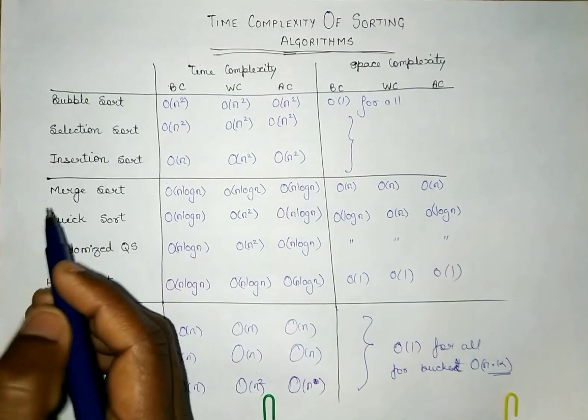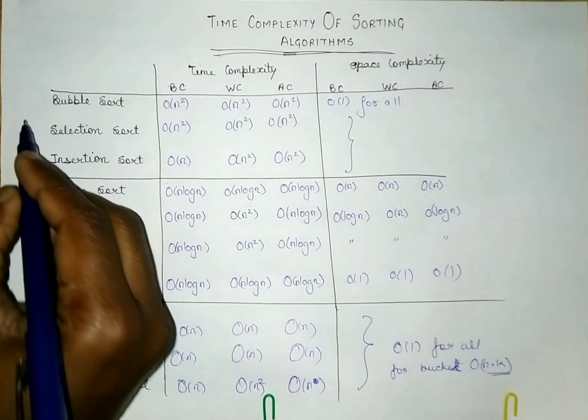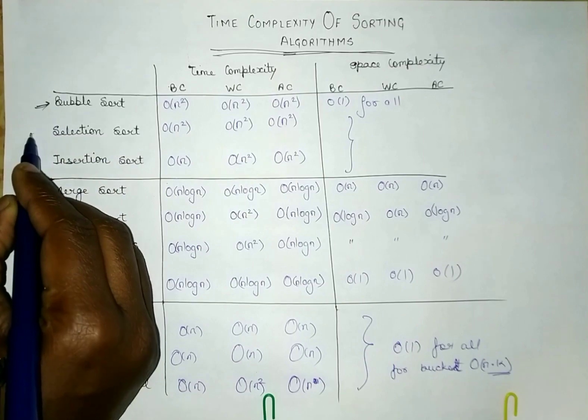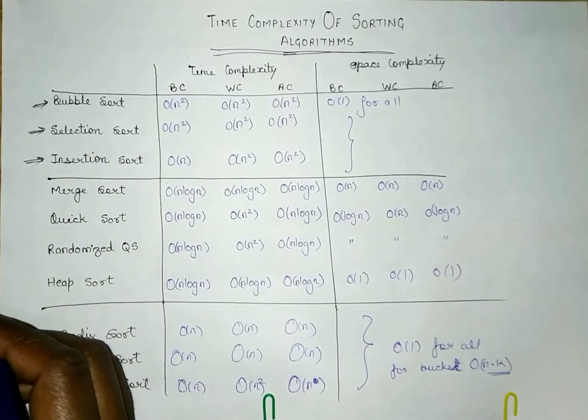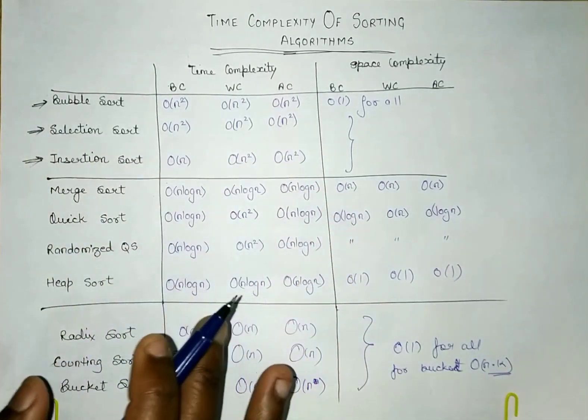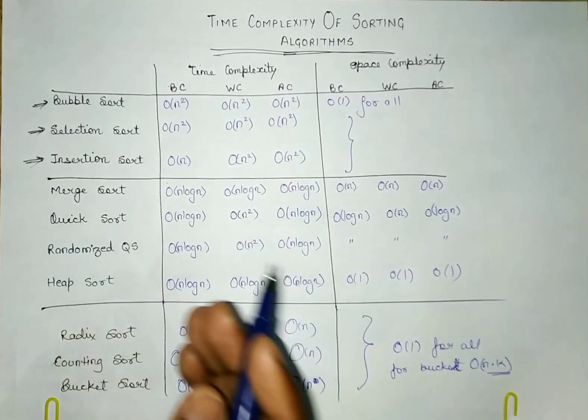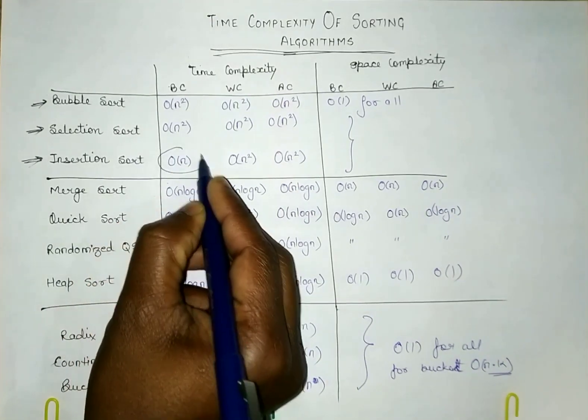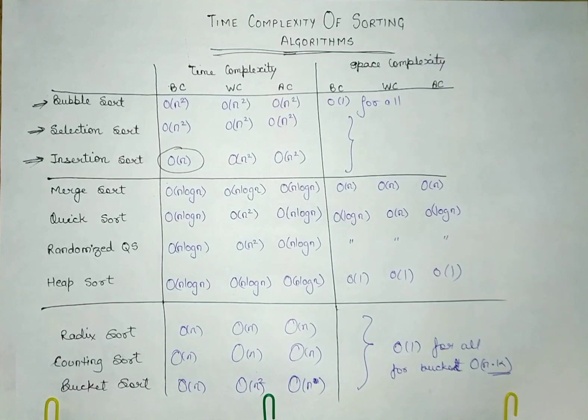Here you can see that the time complexity of bubble sort, selection sort, and insertion sort is order of n square in all cases, except one exception for insertion sort.